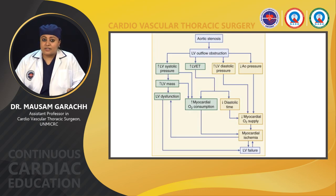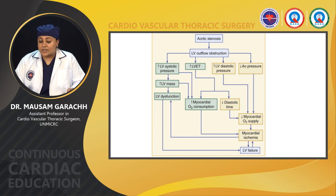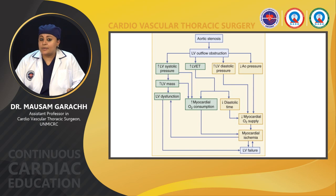A flow chart showing the pathogenesis of aortic stenosis: aortic stenosis is basically LV outflow obstruction, leading to increased LV systolic pressure, increased LV mass, and eventually LV dysfunction and failure. Increased LV emptying time causes increased myocardial oxygen consumption and decreased diastolic time, leading to decreased myocardial oxygen supply, myocardial ischemia, and LV failure. LV outflow obstruction also increases LV diastolic pressure and reduces aortic pressure, further decreasing oxygen supply.